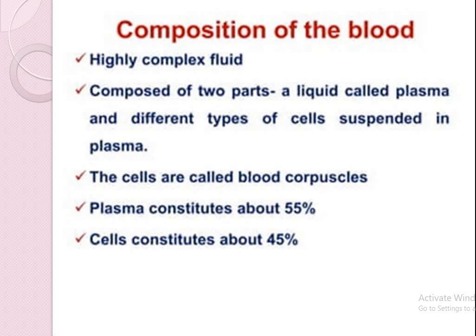Composition of the blood. Blood is a highly complex fluid. It is composed of two parts. A liquid part is called plasma, in which different types of cells are suspended. The cells are called blood corpuscles. Plasma forms about 55 percent and cells form about 45 percent.